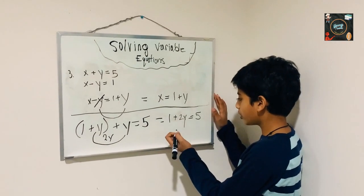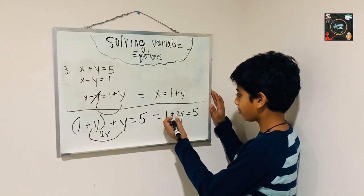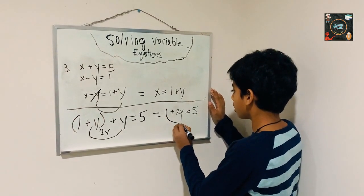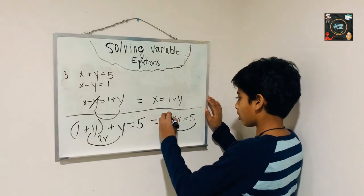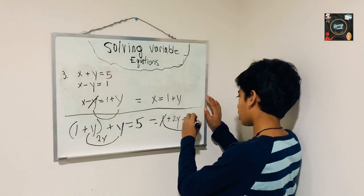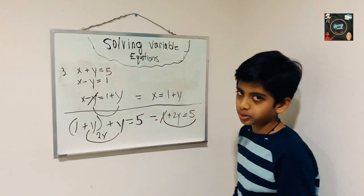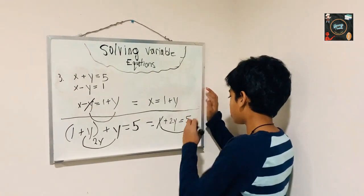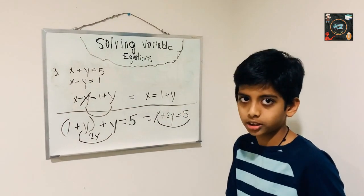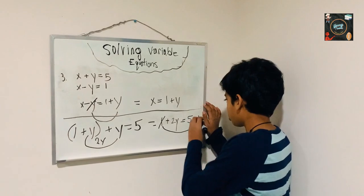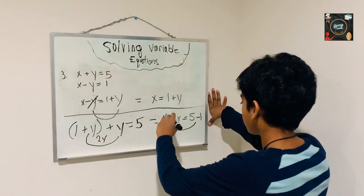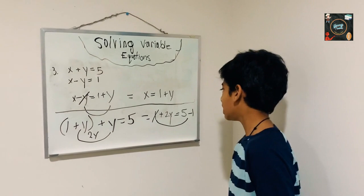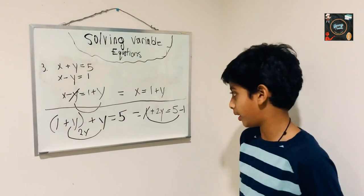Now we have to switch the 1 to the other side. We can cross this out — the opposite of positive 1 is negative 1, so when we switch it to the other side it becomes negative 1. So we have 2y equals to 5 minus 1.